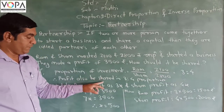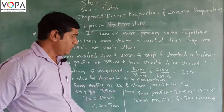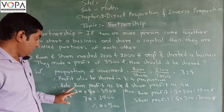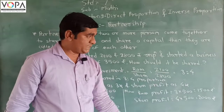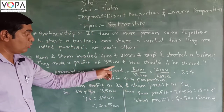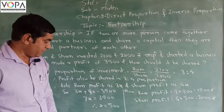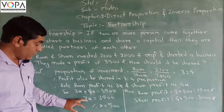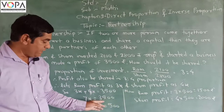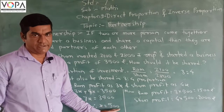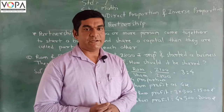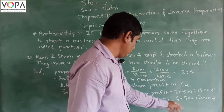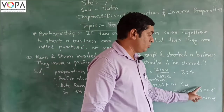The profit is shared in the ratio 3:4. Let Ram's profit be 3x and Shah's profit be 4x. So the equation is: 3x + 4x = 3,500. That gives us 7x = 3,500. Dividing both sides by 7, the value of x is equal to 500. So now we can find how much profit Ram gets and how much Shah gets. Ram's profit is equal to 3x, that is 3 × 500 = 1,500.